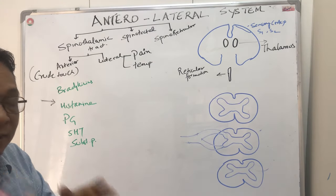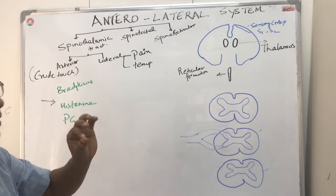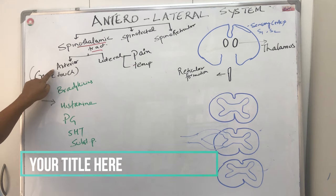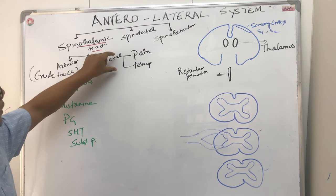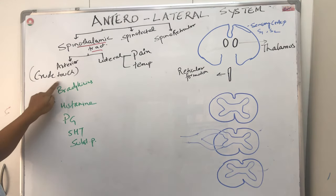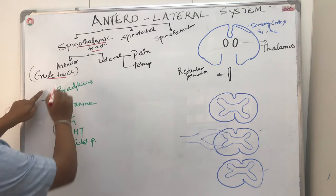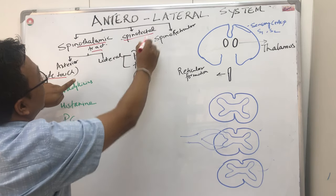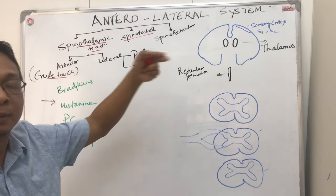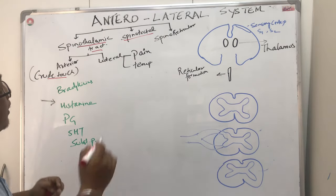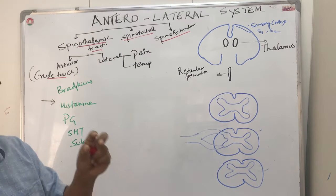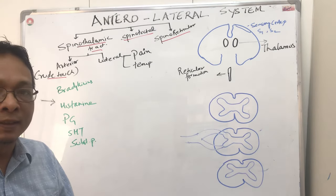Today we are going to describe the anterolateral system. It's a system that carries basically three tracts. One is the spinothalamic tract, which is divided into anterior spinothalamic and lateral spinothalamic. The lateral spinothalamic carries pain and temperature, while the anterior spinothalamic carries crude touch. Then there is the spinotectal tract, also called the spinomesencephalic tract, which starts from the spinal cord and terminates in the superior colliculi. And then the spinal reticular tract, which goes from the spinal cord to the reticular formation and is needed for alertness and awakening of the brain.